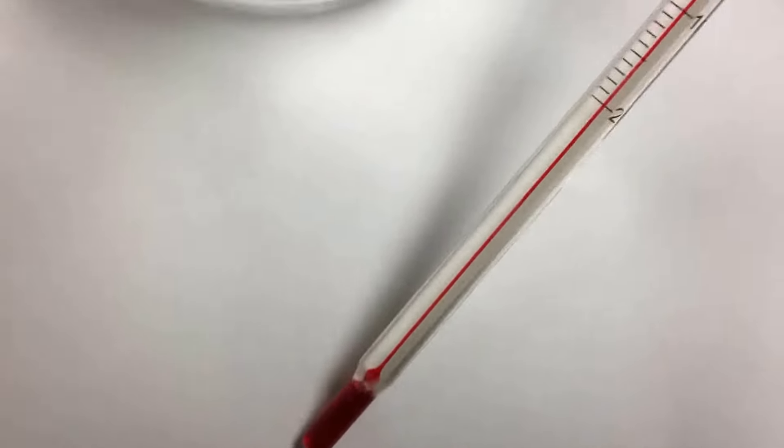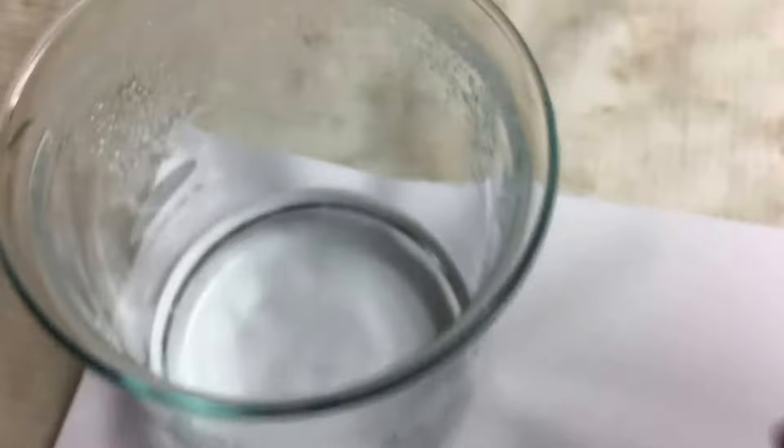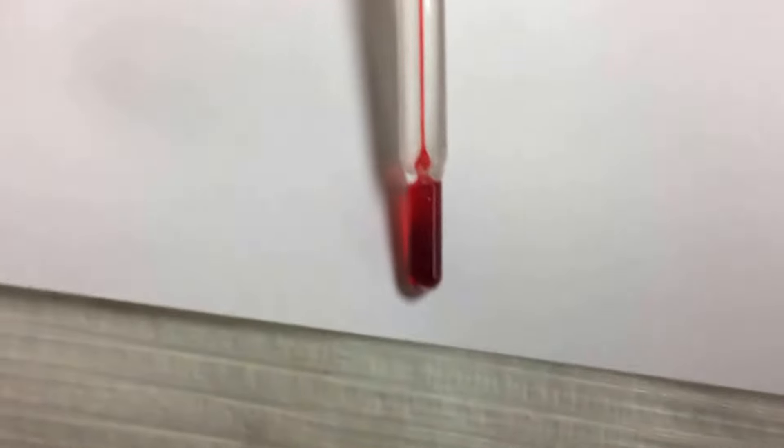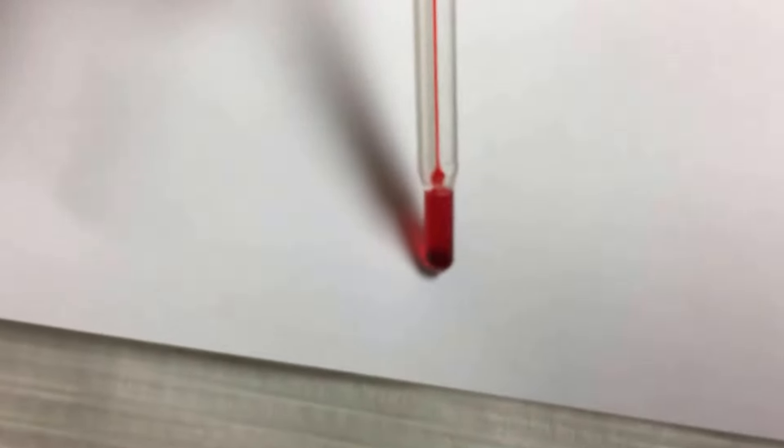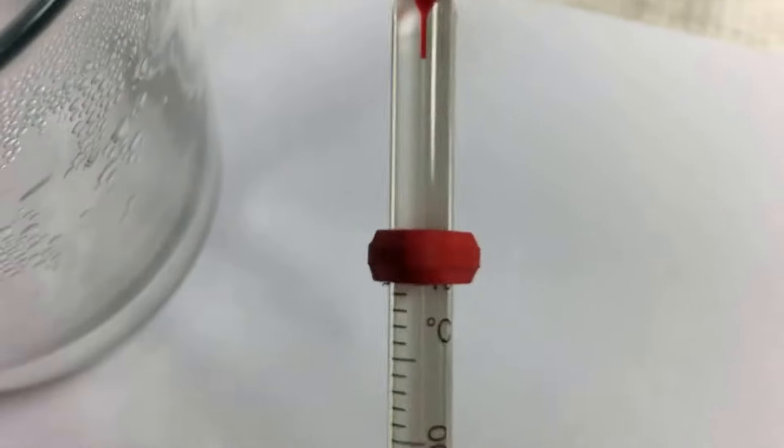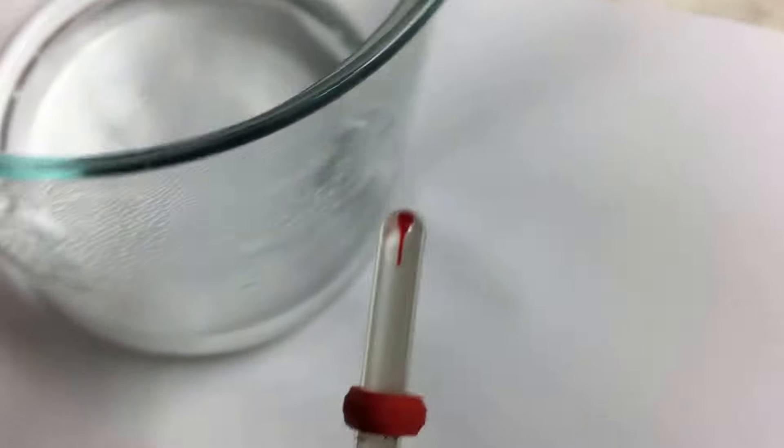This thermometer is reading 100 Celsius for boiling water, but I'm trying to fix it partially. This one contains mineral alcohol, not mercury. You can see it up to here, and it just broke into the top parts. So I'm attempting to fix it with boiling water.